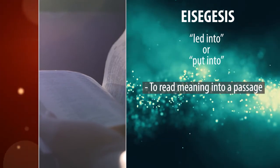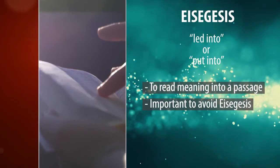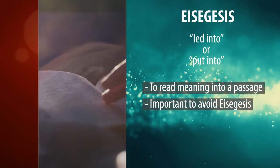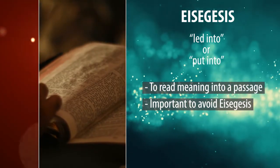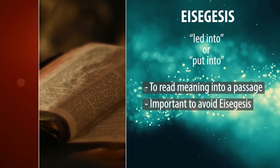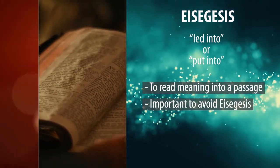Scientifically oriented biblical interpreters work very hard to avoid eisegesis. Instead, they employ principles of interpretation that they believe will ensure them of exegetical, not eisegetical, understandings of scripture.